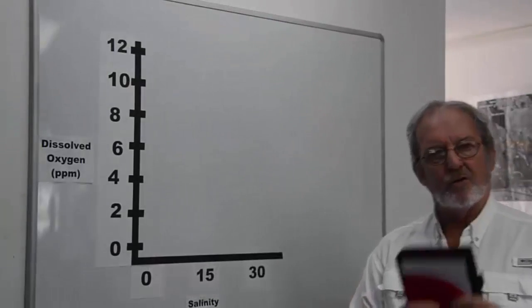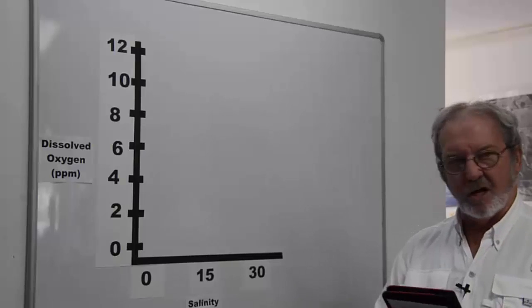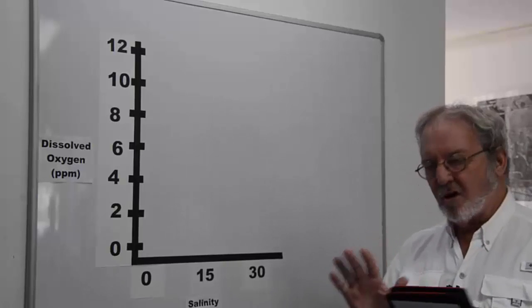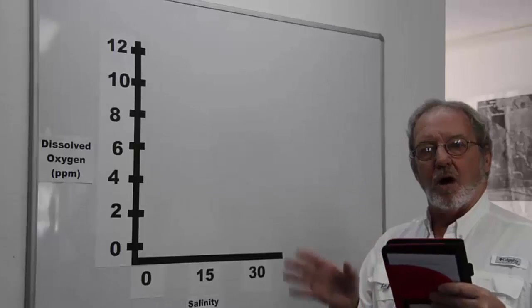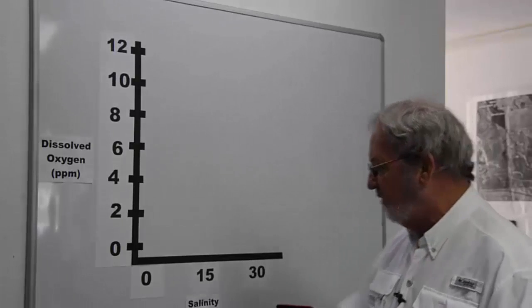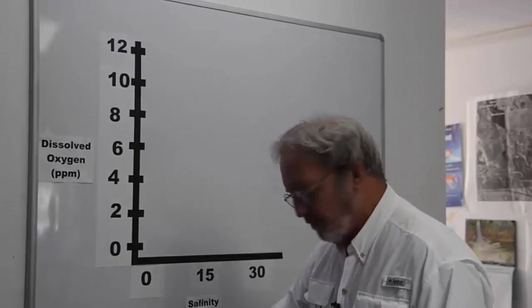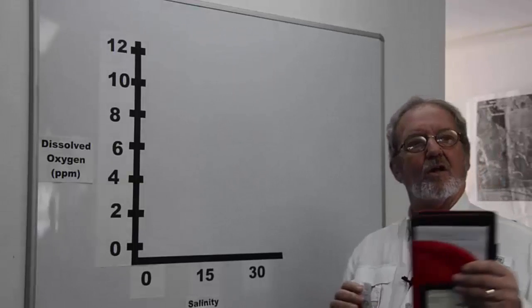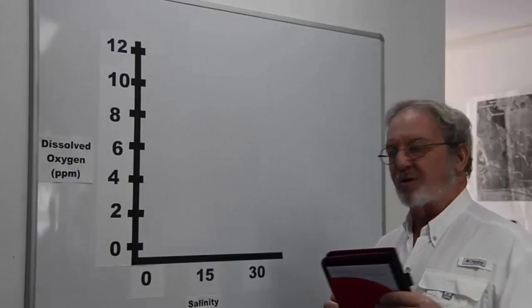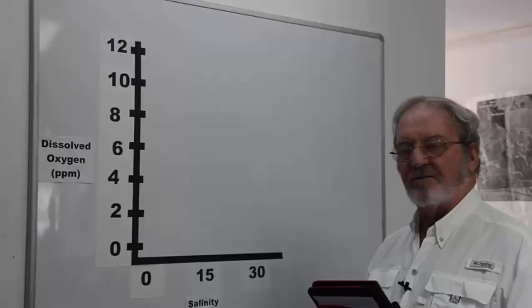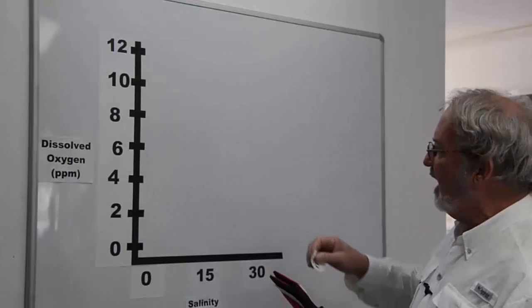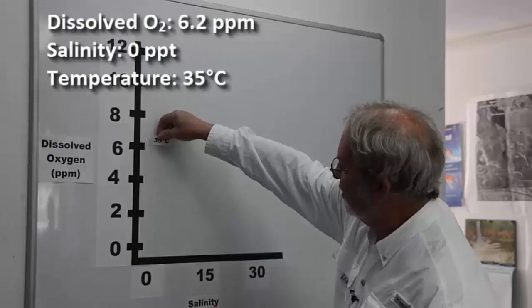Now why don't we try to graph the data that we've just collected with our dissolved oxygen meter. So we're going to start off now with the warm water, the 35 degrees centigrade. And we're going to look at starting with fresh water. So 0 parts per thousand salinity and 35 degrees centigrade and our dissolved oxygen according to our meter was 6.2.